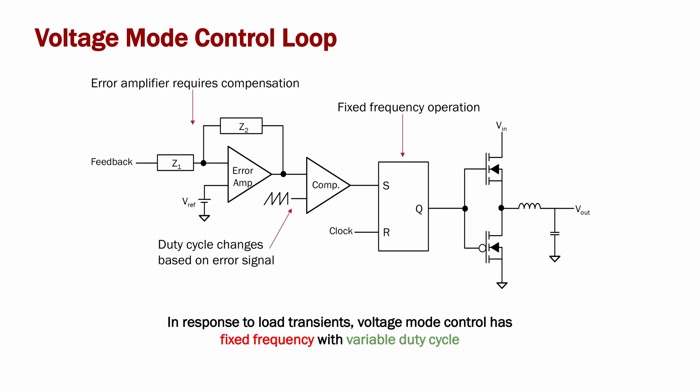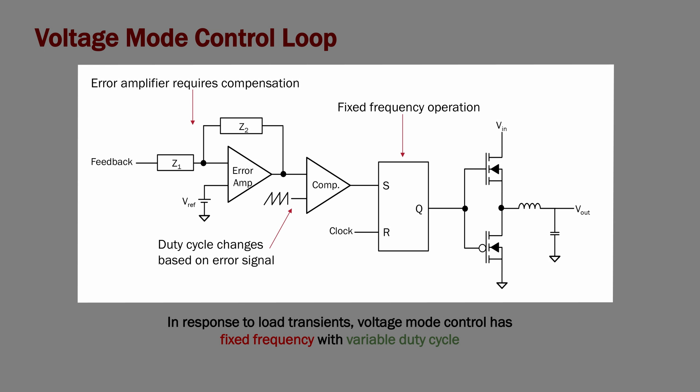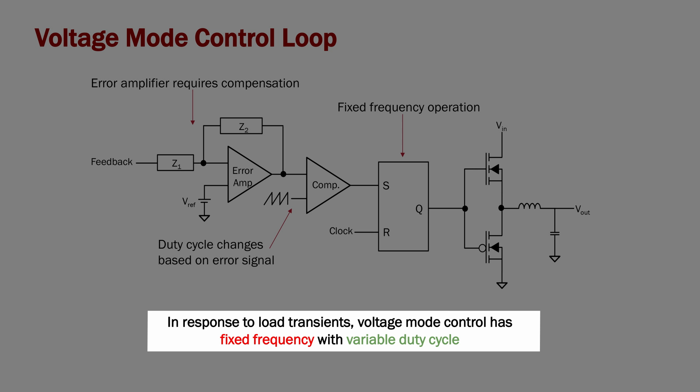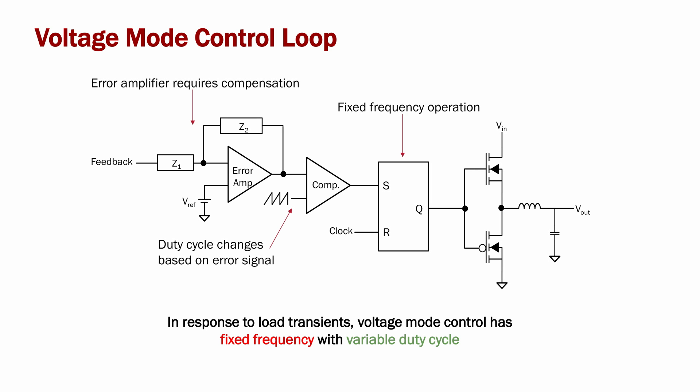If you examine the architecture of a voltage mode control loop, it consists of an error amplifier, a comparator, and a digital latch that is used to generate the PWM pulse to drive the power stage. The main takeaway in this slide is that voltage mode control is a fixed frequency variable duty cycle architecture, and it requires compensation around the amplifier, which the end user must typically set up.